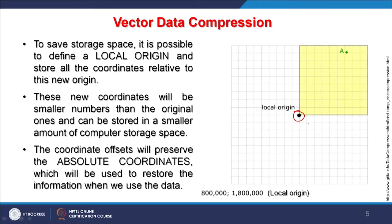Coordinate offsets will preserve absolute coordinates which will be used to restore information when we use this data. The offset information can be stored separately, and whenever easting-northing or geographic coordinates are needed, they can be converted easily. Originally, the data can be stored using a local origin, achieving storage vector data compression.